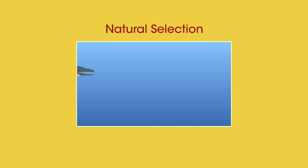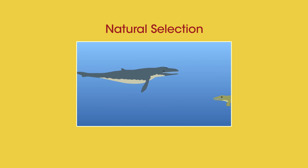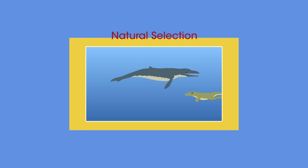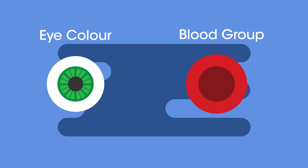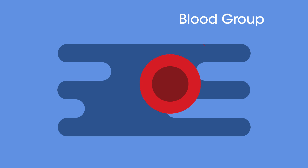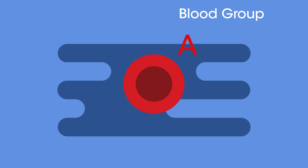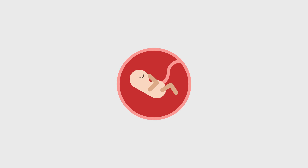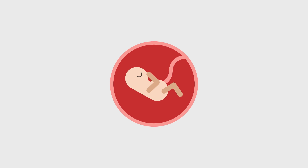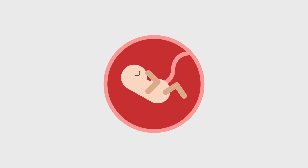If you want to learn more about natural selection, watch this video. Some examples of variation in humans that are controlled by genes include eye colour and blood group. If you have blood group A, it's because you have the alleles for this characteristic. This is genetic variation, and it is something that you were born with, and nothing can change it.